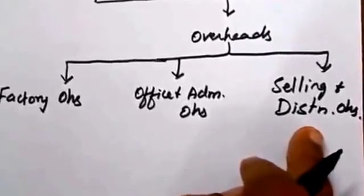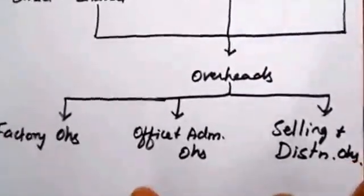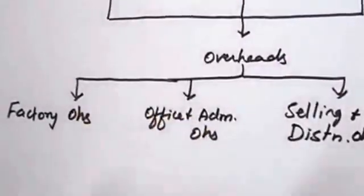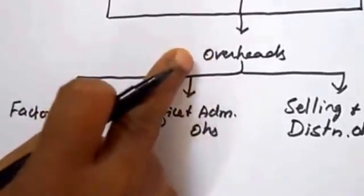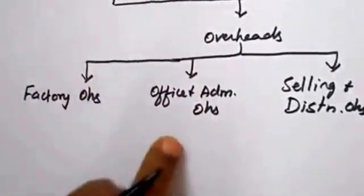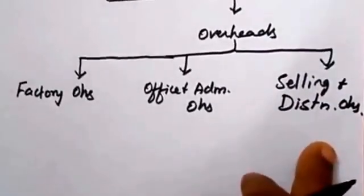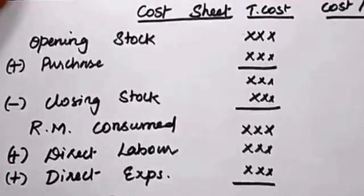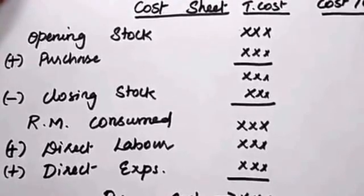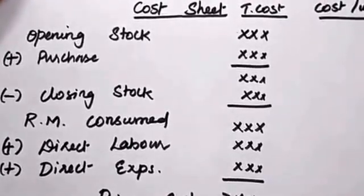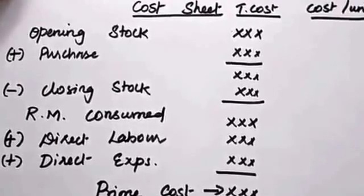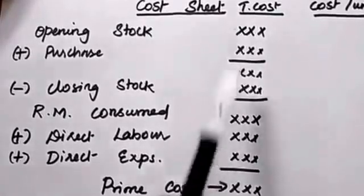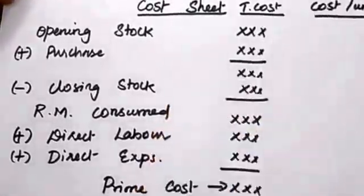Selling and distribution expenses are indirect because they are not incurred during the production process. After the production, the product is ready for consumption, and we need to incur some additional expenses called overheads — classified into factory overheads, administrative overheads, and selling and distribution overheads. With this knowledge, we can easily understand the cost sheet, which is a statement where we record the total cost of production, allowing us to calculate and compare total cost as well as cost per unit.